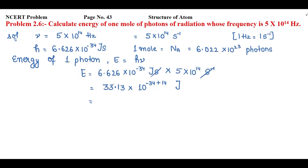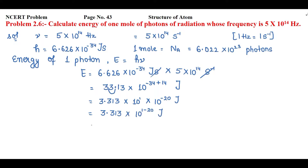We write 33.13 in scientific notation — there should be only one digit on the left side of the decimal. Displacing the decimal one place from right to left gives 3.313 × 10¹. Now combining with 10⁻³⁴⁺¹⁴ = 10⁻²⁰, and since powers are in multiplication we add: 10¹ × 10⁻²⁰ = 10⁻¹⁹. So the result is 3.313 × 10⁻¹⁹ joule.